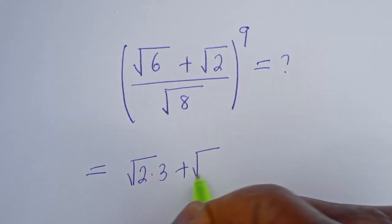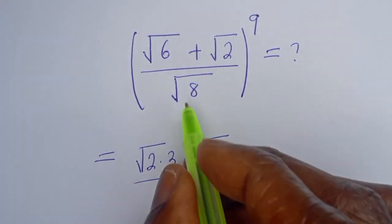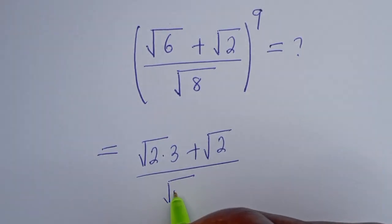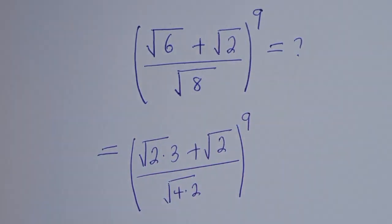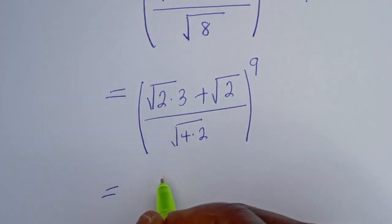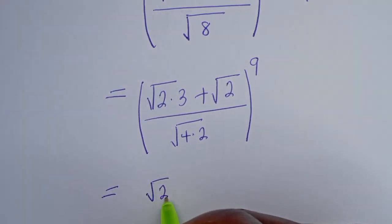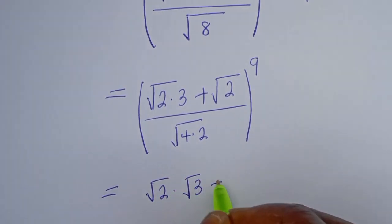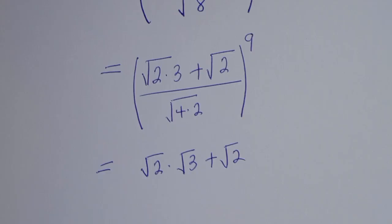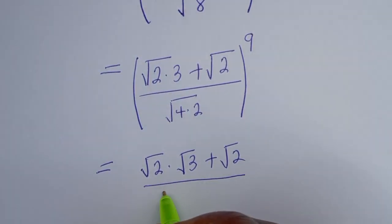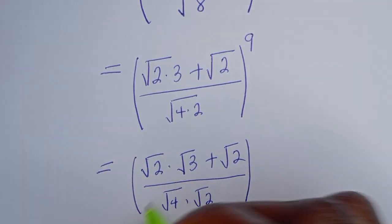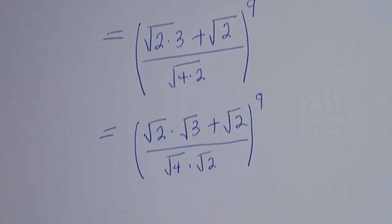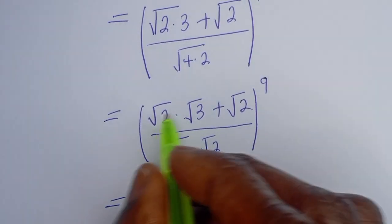Plus square root of 2, divided by square root of 8 — completing our square root of 4 multiplied by 2 — all to the power of 9. This is equal to square root of 2 multiplied by square root of 3, plus square root of 2, divided by square root of 4 multiplied by square root of 2, all to the power of 9. Square root of 2 is common here, let's bring it out.